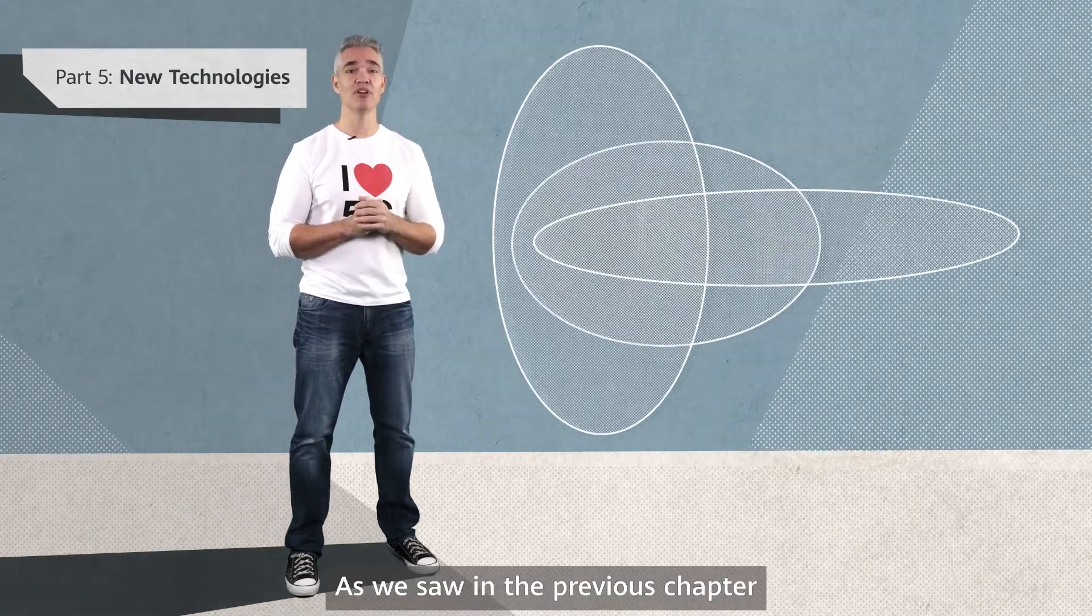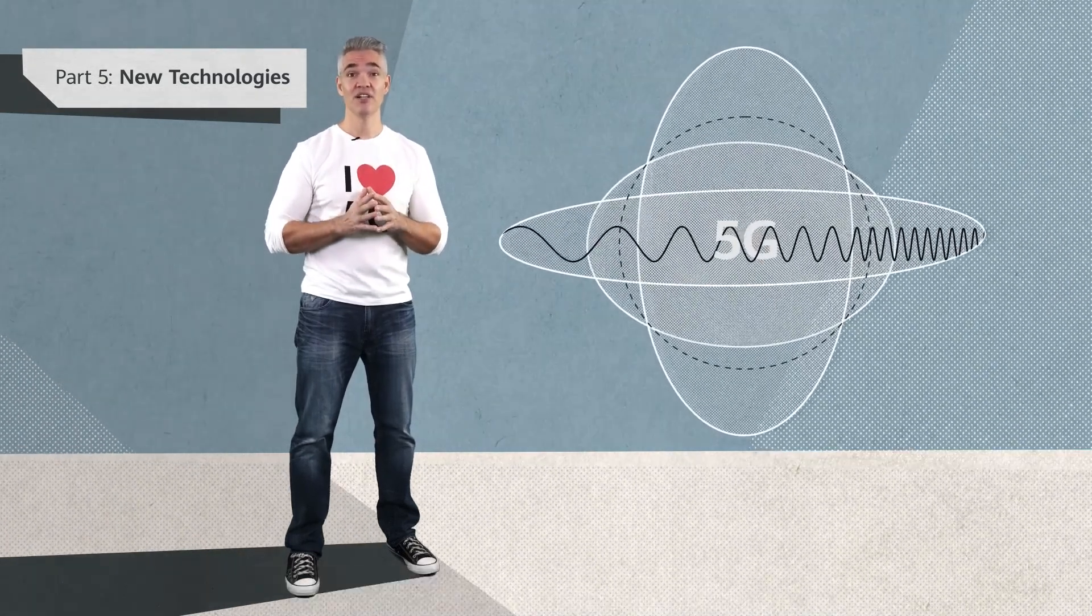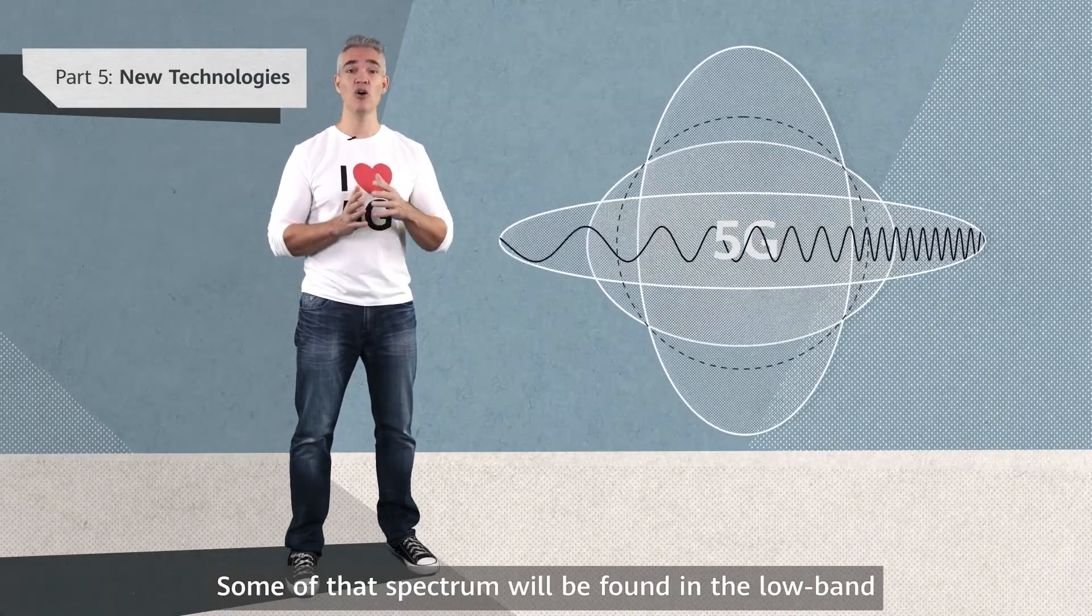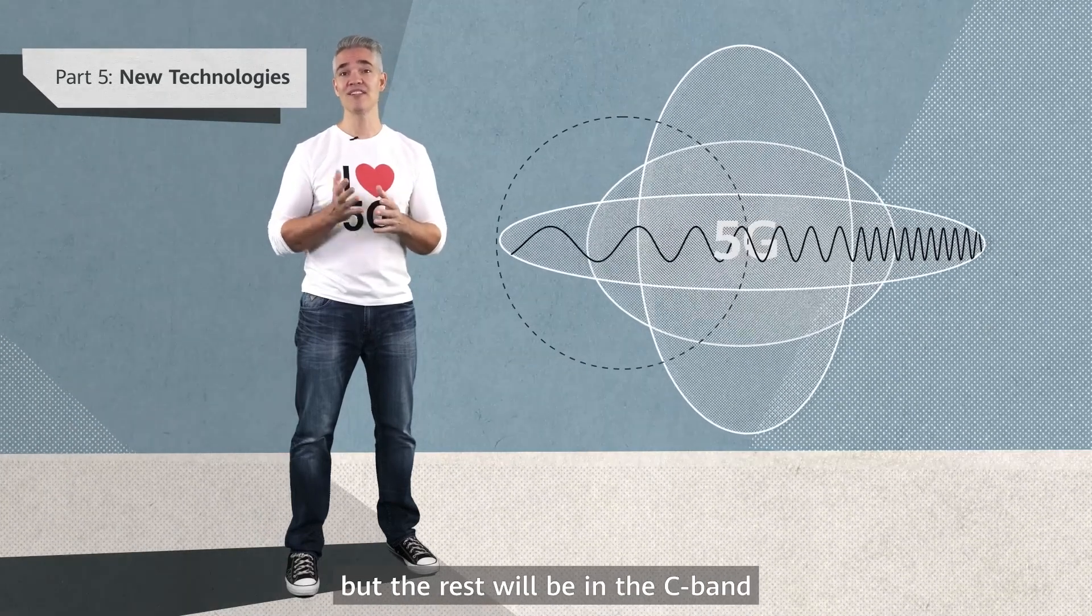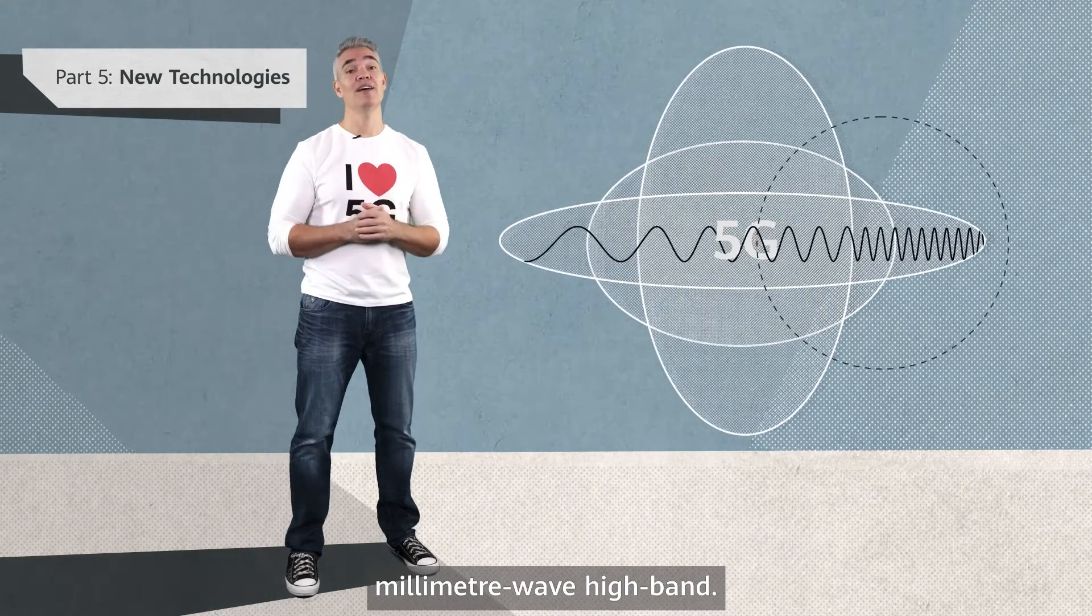As we saw in the previous chapter, 5G will need a lot of spectrum, gigahertz of it. Some of that spectrum will be found in the low band, but the rest will be in the C band, as well as in the super fast millimeter wave high band.